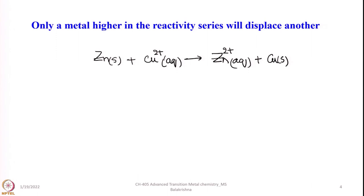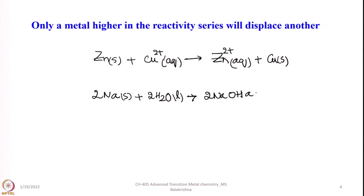Sodium is highly reactive and is able to displace hydrogen from water. For example, if you take solid sodium and add it to water — I am sure you are all familiar with this equation — H₂ is liberated. Sodium is highly active and is able to displace hydrogen from water. Less active metals such as iron or zinc cannot displace hydrogen from water but do readily react with acids.